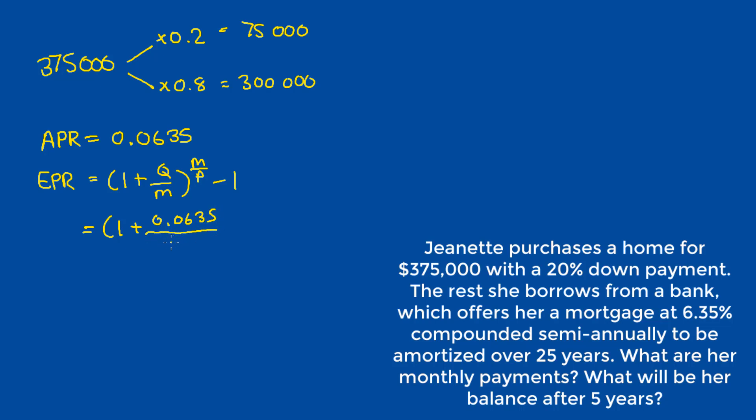And we know that the quoted interest rate is equal to 0.0635, and M, or the number of compounds per year, is equal to 2 because it compounds semi-annually, raised to 2 over 12 because there are monthly payments to be made in 12 months in a year. And that should give us 0.005222990783.